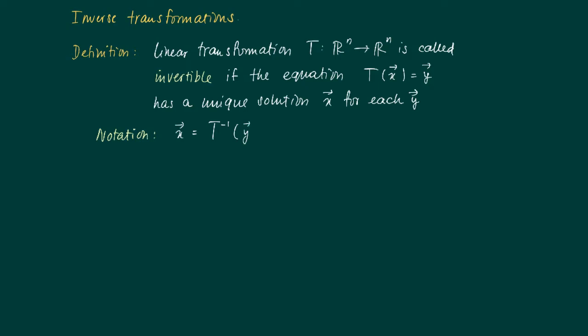And this vector is denoted T^(-1)(Y), or the inverse of Y. And T^(-1) is called the inverse transformation of T.